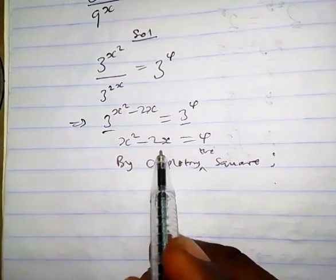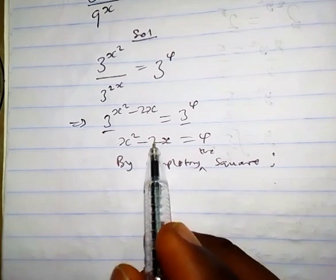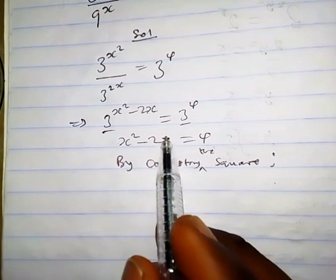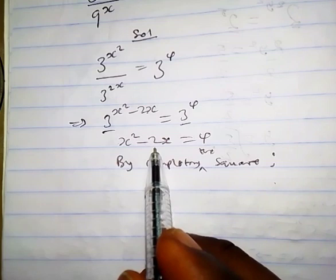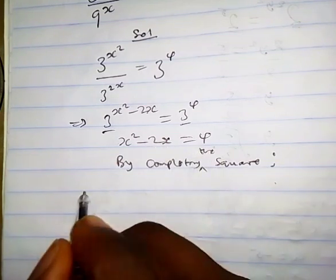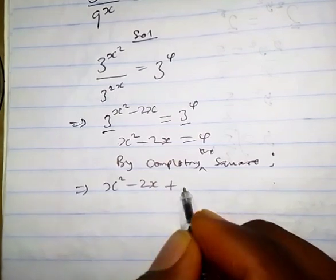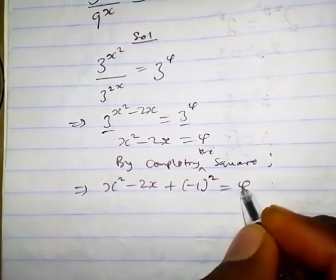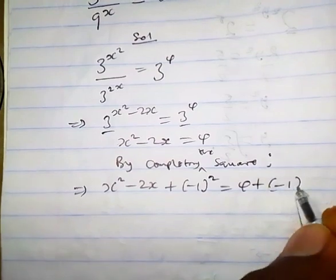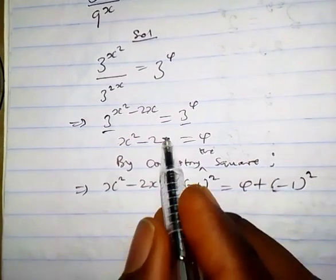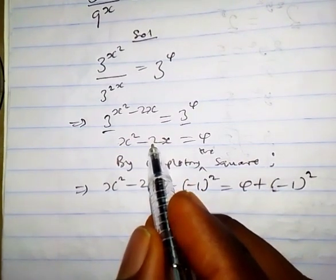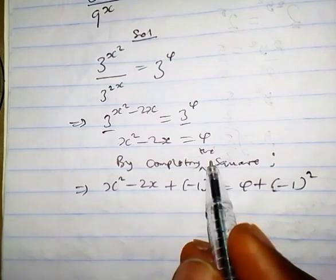So the coefficient of s here is minus 2. We take half of the coefficient of s which is minus 1 and square it to both sides, which implies s squared minus 2s plus minus 1 all squared equals 4 plus minus 1 all squared because half of minus 2 is minus 1, and when we square it.